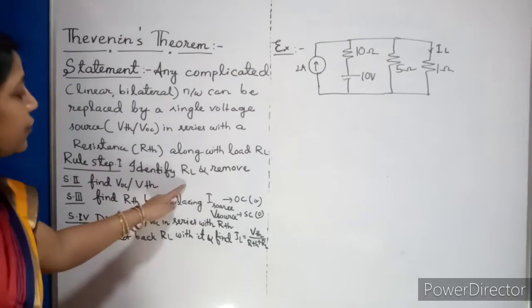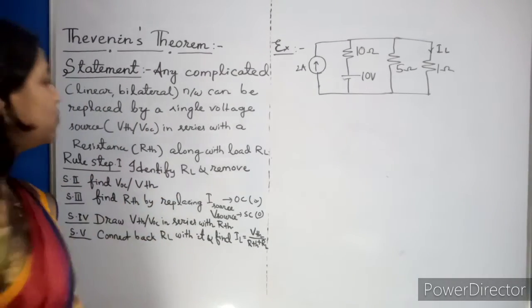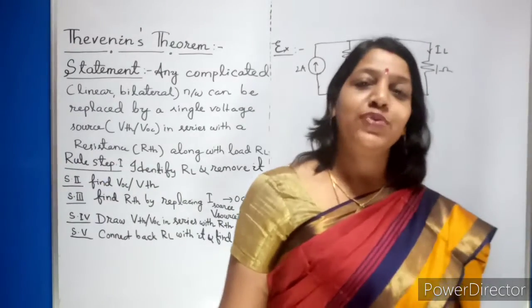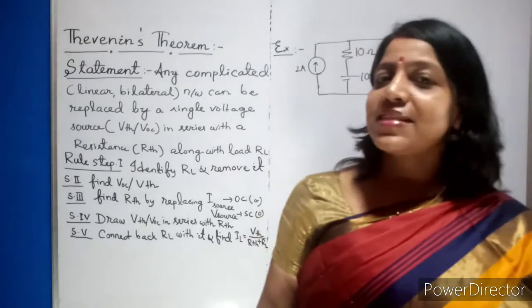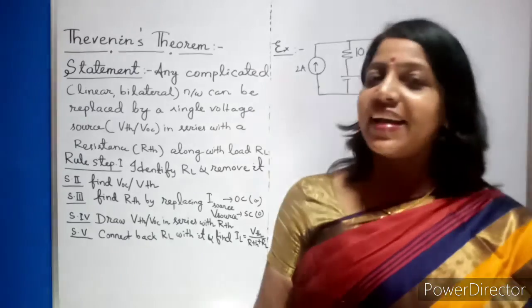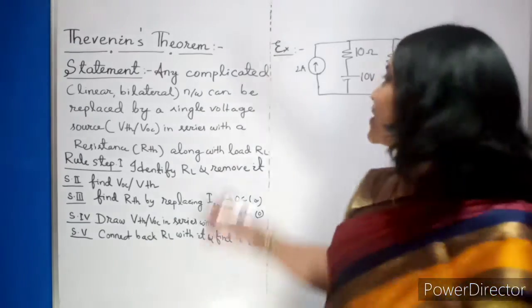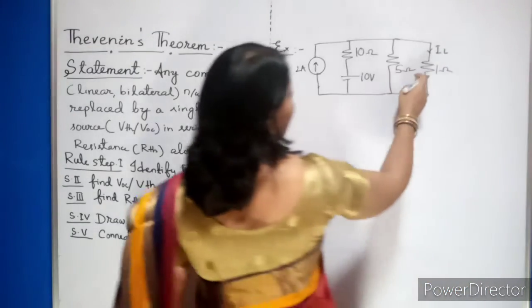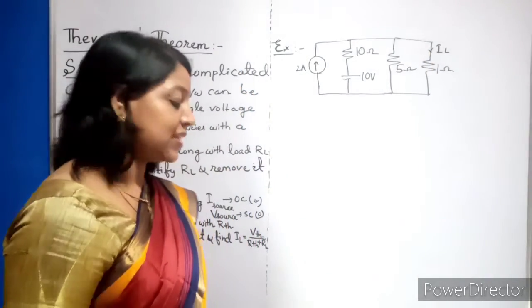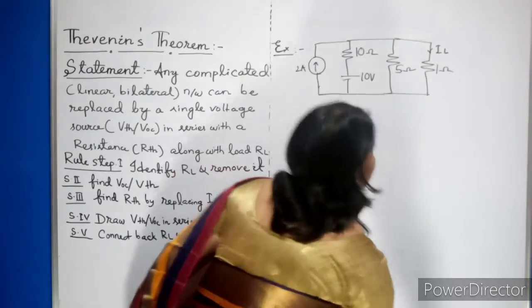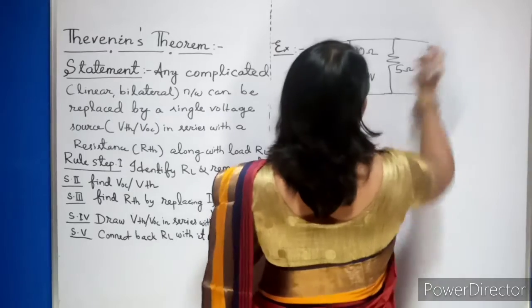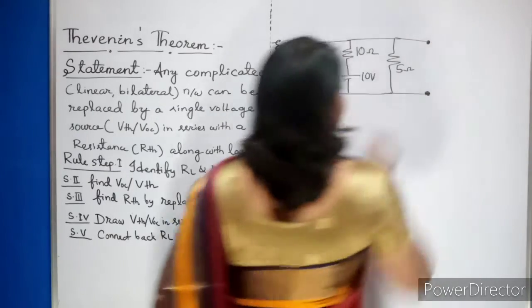Step 1: Identify the load resistor and remove it. The load resistor is the resistor across which you want to find the current. Here, the circuit asks us to find the current across the 1 ohm resistor, so that is your load resistor. Remove it — the circuit now becomes open at that point.